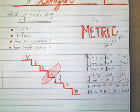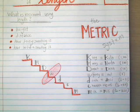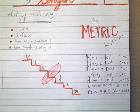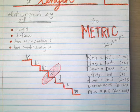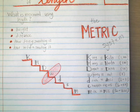Now swap over to the metric words. Instead of 'King Henry Doesn't Usually Drink Chocolate Milk,' say: kilo, hecto, deca, unit, deci, centi, milli. Try it with the snap rhythm: kilo, hecto, deca, unit — deci, centi, milli. If you're not snapping you'll get a stamp when you do this in your journal! Five, four, three, two, one: kilo, hecto, deca, unit — deci, centi, milli.